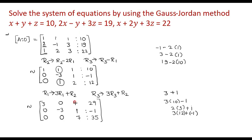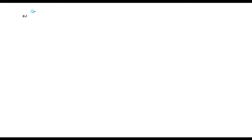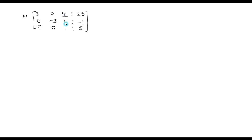For the next step, we need to reduce 4 and 1 to 0 using this 7. Before that, note that in the third row, 7 is a common factor, so we change R3 to (1/7)·R3. This gives the matrix as: row 1 is 3, 0, 4, 29; row 2 is 0, minus 3, 1, minus 1; and row 3 becomes 0, 0, 1, 5.